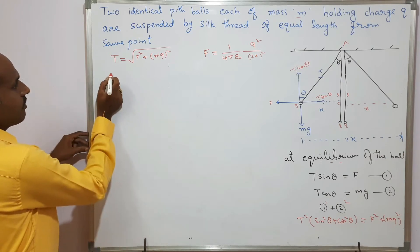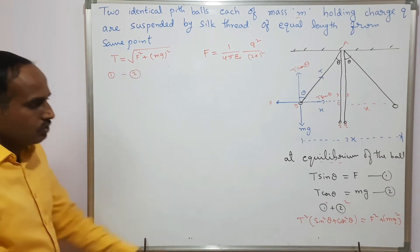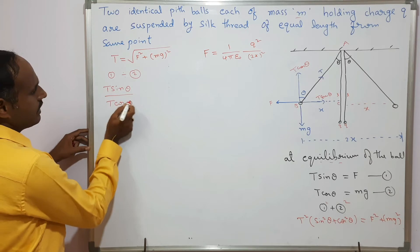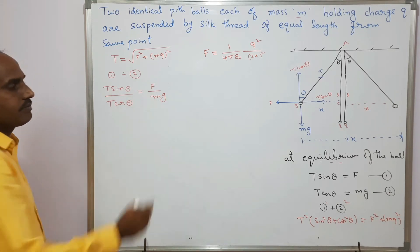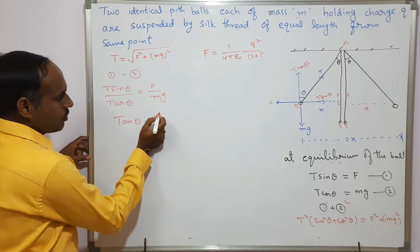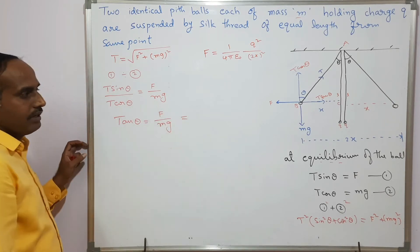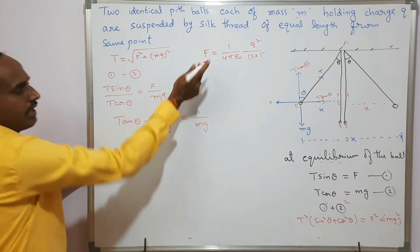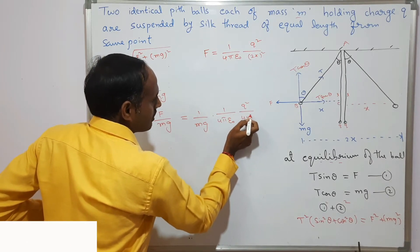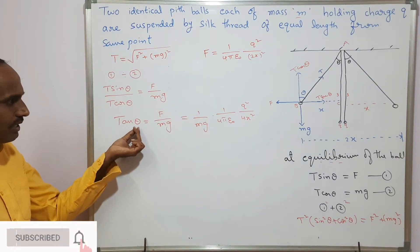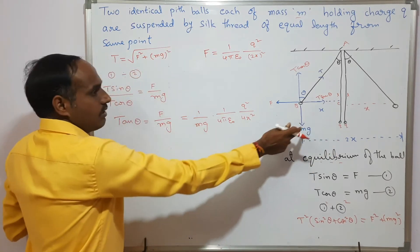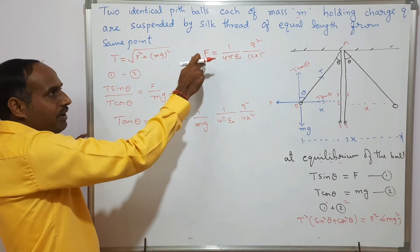Dividing equation 1 by equation 2: (T sin θ)/(T cos θ) = F/mg, so tan θ = F/mg. Substituting the force expression: tan θ = (1/mg) × (1/4πε₀) × q²/(4x²). If you have the mass and charge q, and the separation, you can find the force and then the angular displacement.